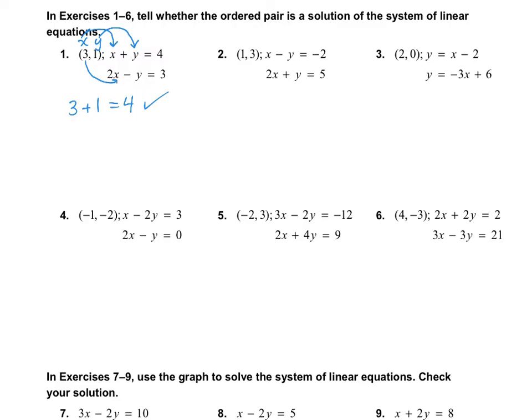So now let's plug it into the second one. So 3 is going to go for x, and 1 is going to go in for y. So we have 2 multiplied by x, which is 3, minus 1 equals 3. So that's 6 - 1 = 3. This does not work. So that means that my answer is no, the point (3, 1) is not the solution to that set of linear equations.